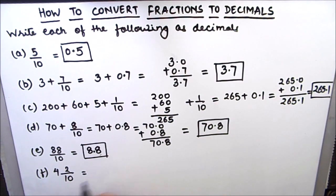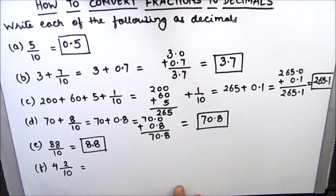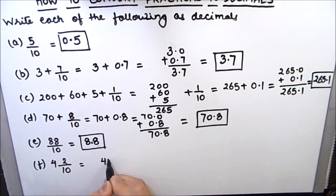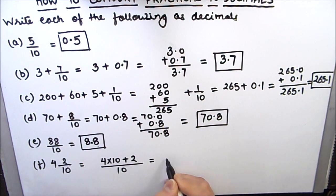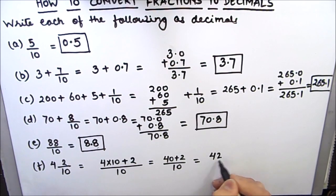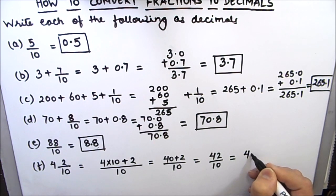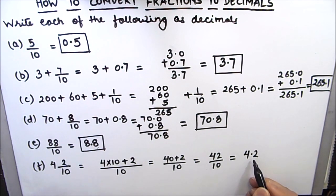The next one is 4 and 2 by 10. So this is a mixed fraction. We will convert this mixed fraction into an improper fraction. For converting a mixed fraction to an improper fraction, we multiply the whole number with the denominator and add the numerator: 4 times 10 plus 2, which is 40 plus 2 divided by 10, equal to 42 by 10. When we divide by 10, we put the decimal point just before one digit from the right. So we will get 4.2 as our final answer.